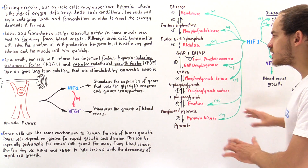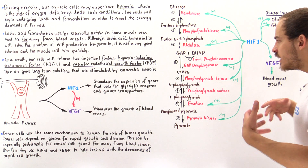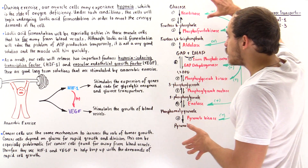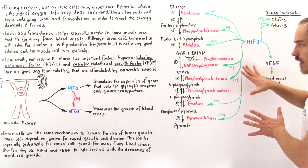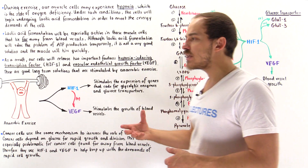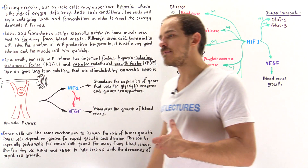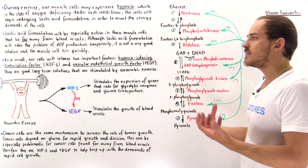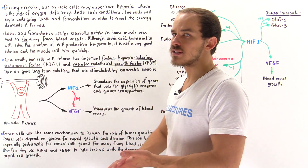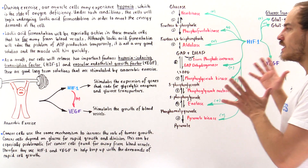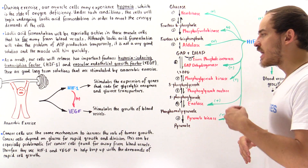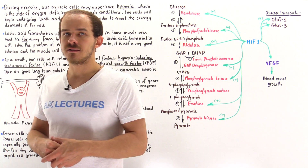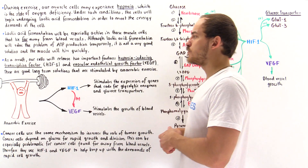In glycolysis, in step 6, we essentially use up NAD+ coenzymes, and the process of glycolysis itself does not actually regenerate these NAD+ coenzymes. If we don't regenerate them — because we have a limited supply of these coenzymes in our cells — glycolysis will essentially end very quickly. So under aerobic conditions, we use the citric acid cycle to regenerate those NAD+ molecules.